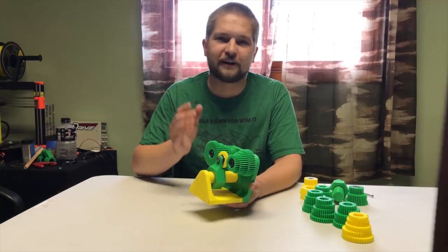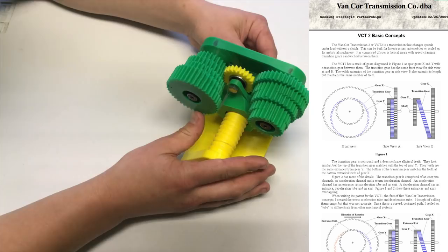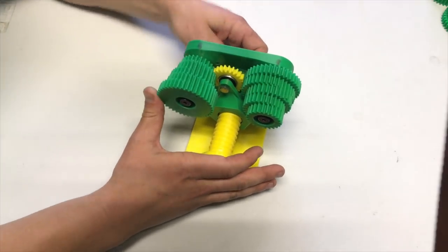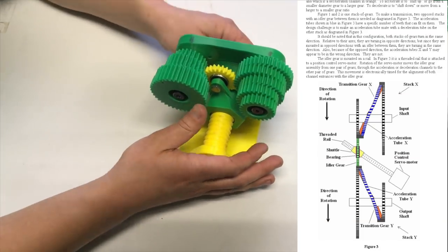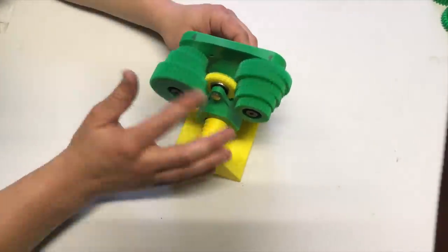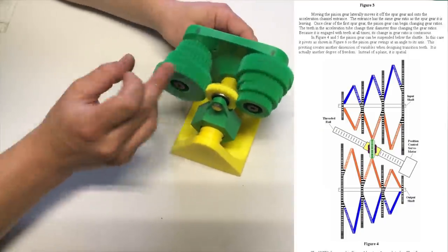With that, allow me to introduce you to the van core transmission number two. This is a really interesting transmission design that was patented by Deal van core in 2002, and it was modeled and printed by yours truly.